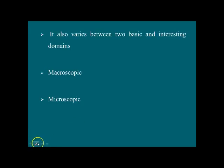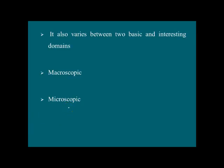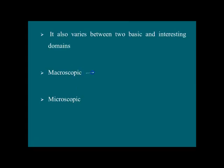We can also say that the scope of physics varies between two interesting domains: macroscopic and microscopic. In the macroscopic domain, one example is a galaxy. In the microscopic domain, we consider atoms and molecules.